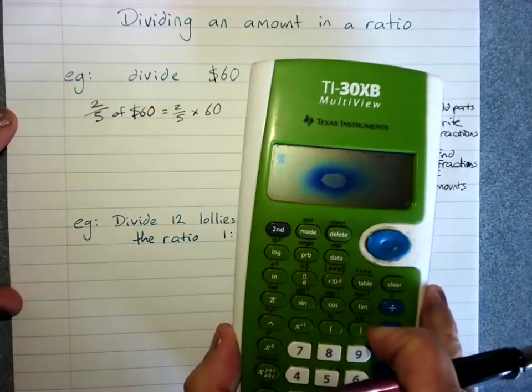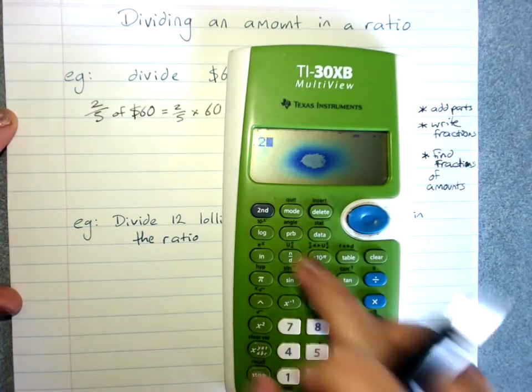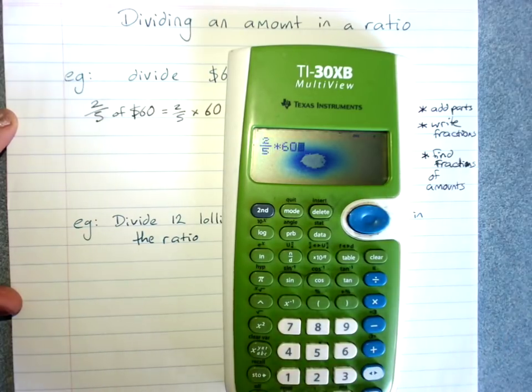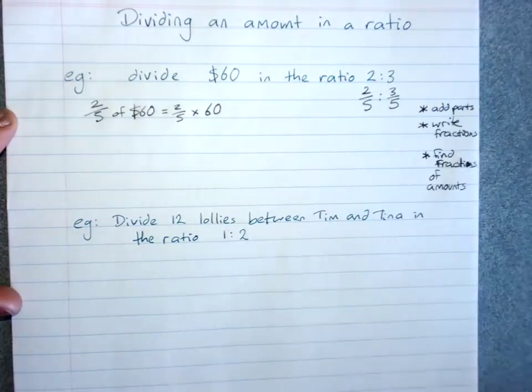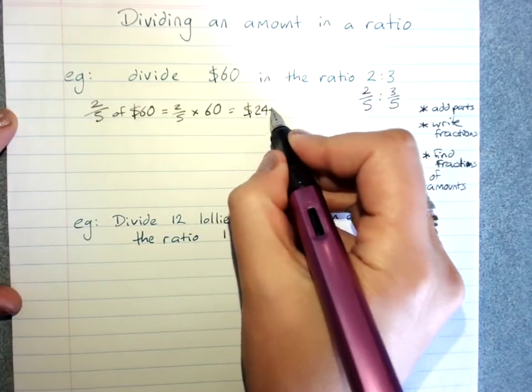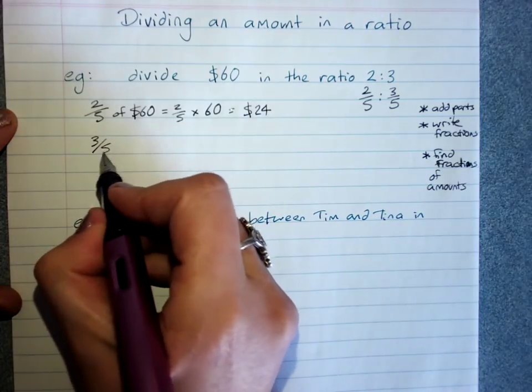Use your calculator - two-fifths times sixty. This person gets twenty-four dollars. Three-fifths of sixty.